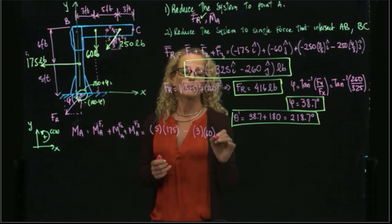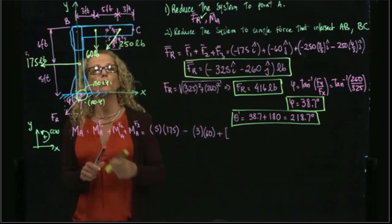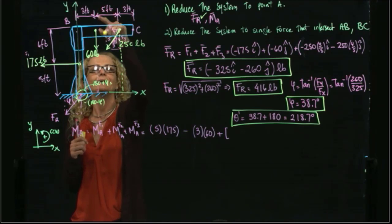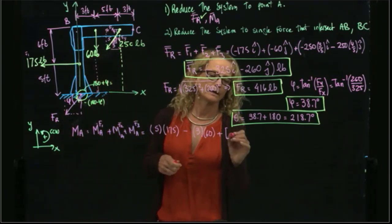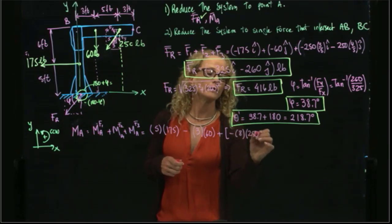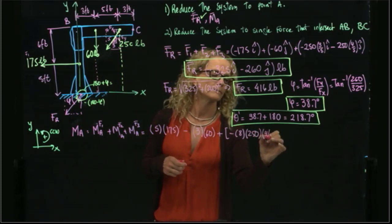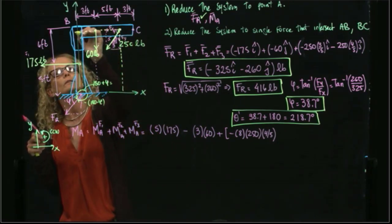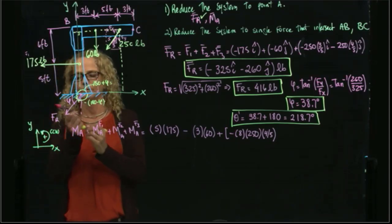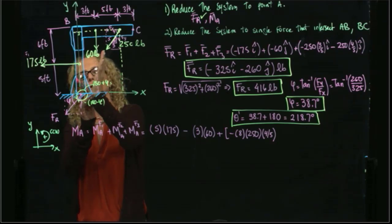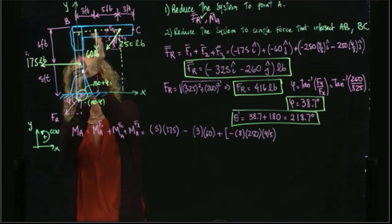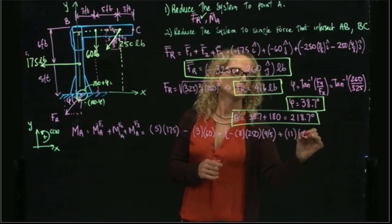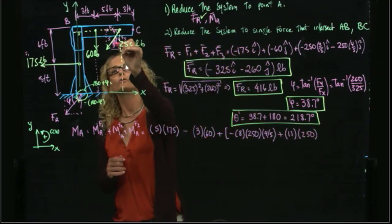Then I have the moment produced by the third force. It has two components. I will slide the first component — the perpendicular distance is 8 — and that moment will be negative: negative 8 times 250 times 4 over 5. Then I slide the other component until I get the perpendicular distance, which is 11 feet. Placing my palm toward the distance and curling my fingers toward the force gives me a positive moment: 11 times 250 times the cosine of this angle, which is 3 over 5.